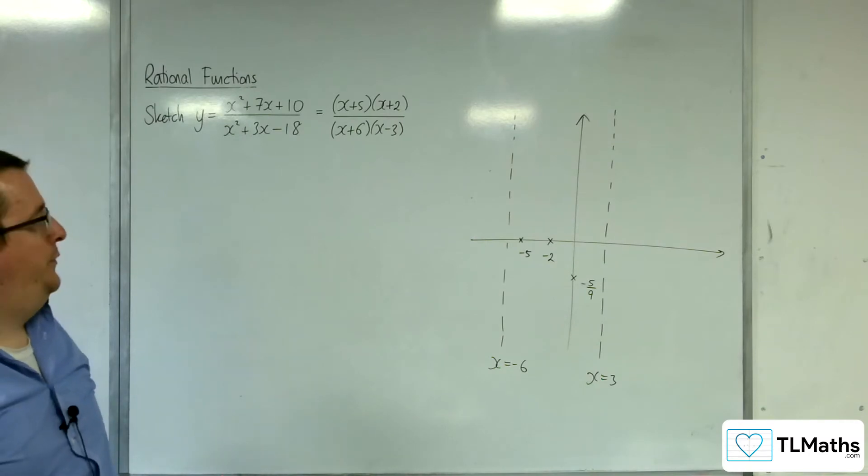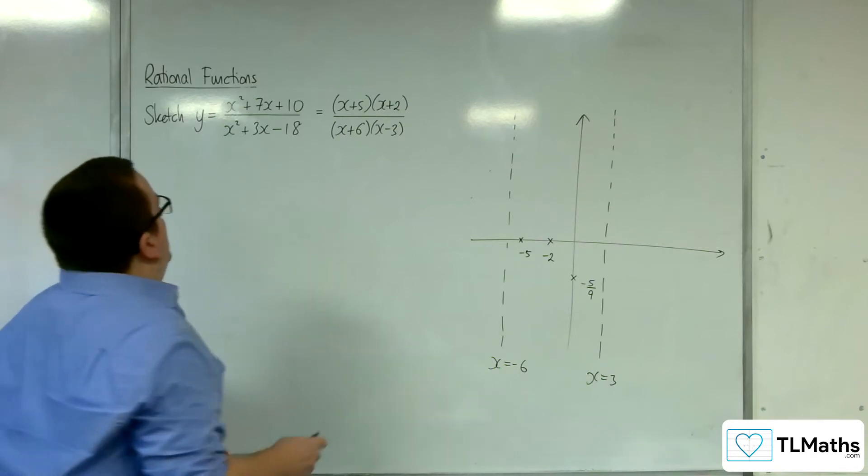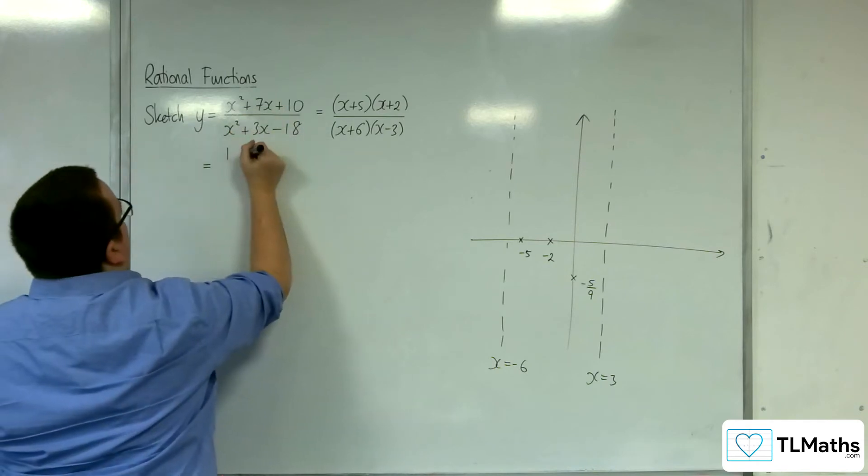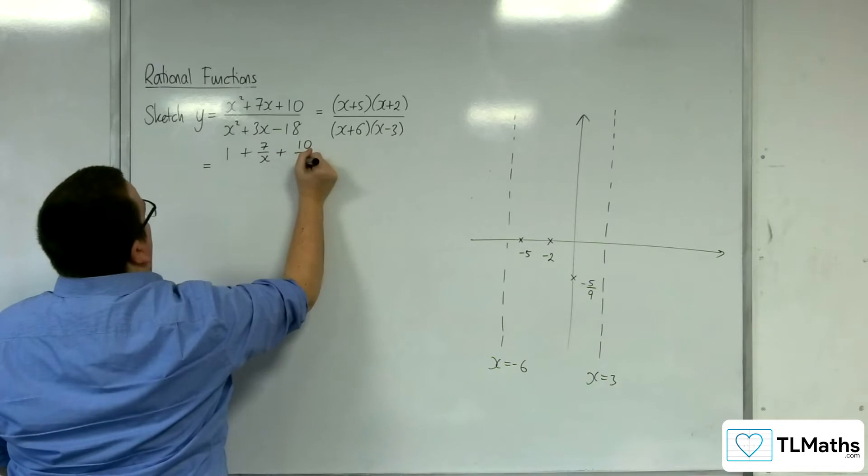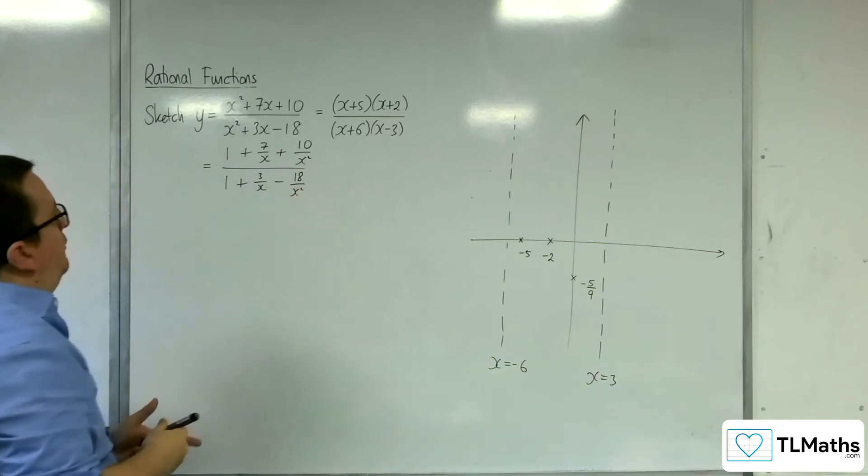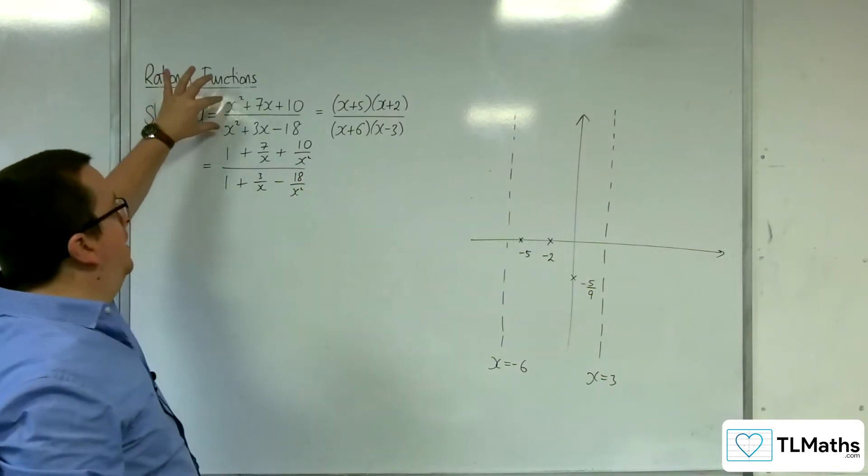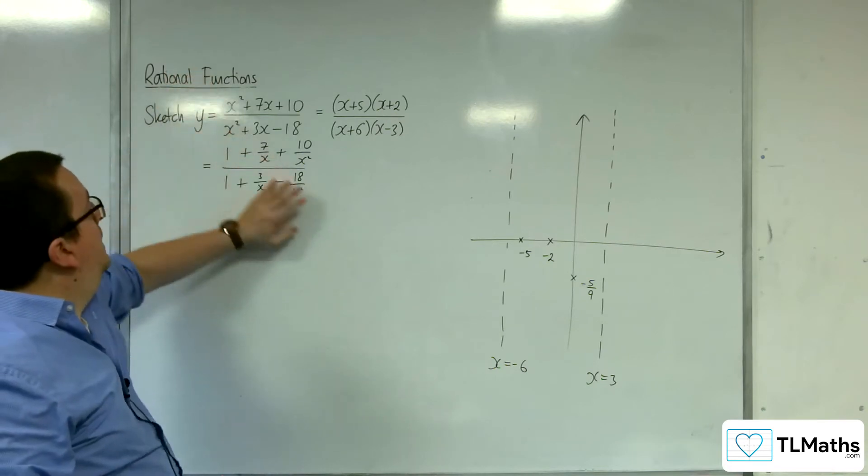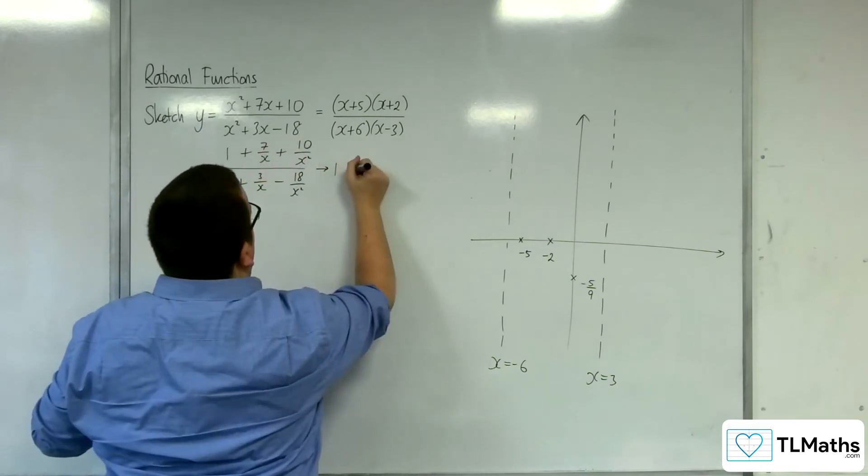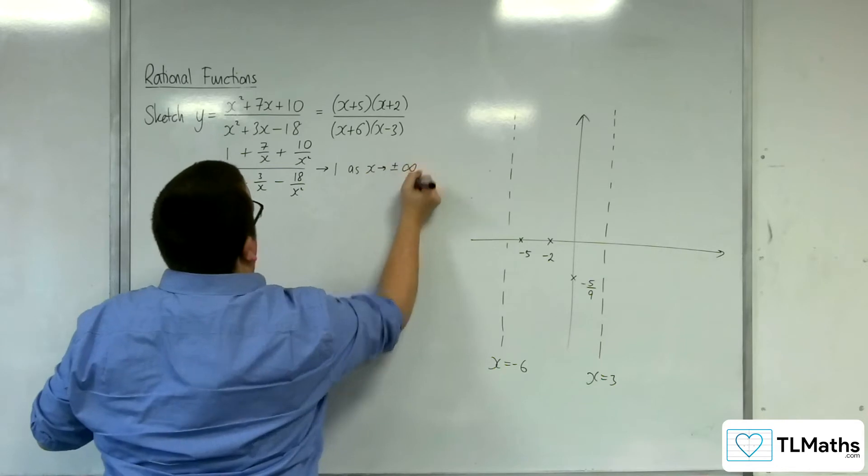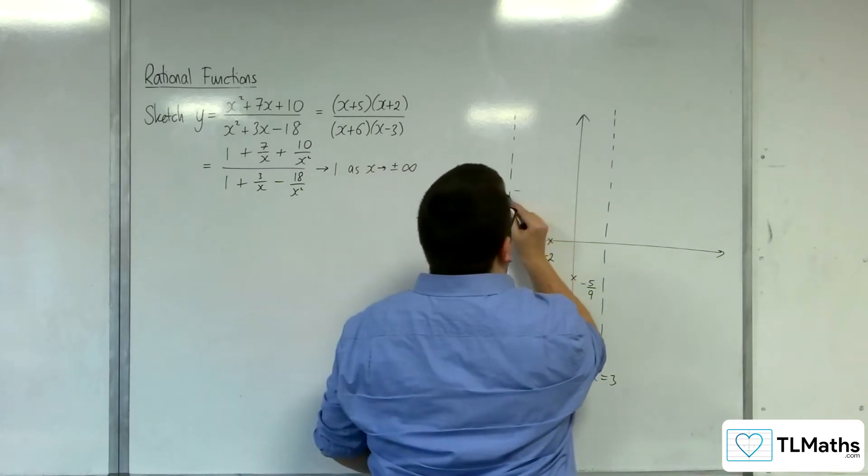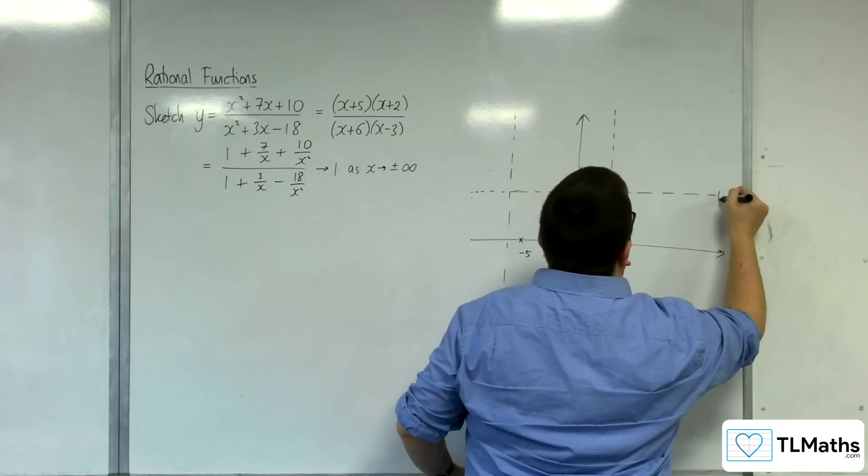How about any horizontal asymptotes? So horizontal asymptotes will exist dividing through by x squared. So 1 plus 7 over x plus 10 over x squared over 1 plus 3 over x take away 18 over x squared. So horizontal asymptotes, there will be 1 because the order of the polynomial on the top is the same as the order of the polynomial on the bottom. So as x tends to positive or negative infinity, this is going to tend to 1 over 1. So y equals 1. Let's just put it somewhere there for a moment. There's our y equals 1.